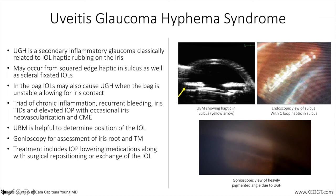Gonioscopy is also key to identify any neovascularization of the iris or the angle, which can be a feature of chronic UGH syndrome, but may also indicate presence of neovascular glaucoma, which can mimic UGH syndrome.